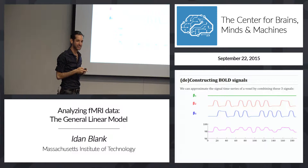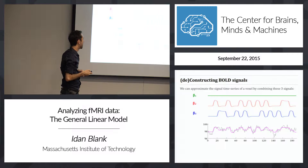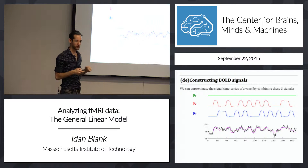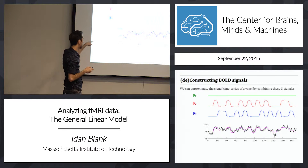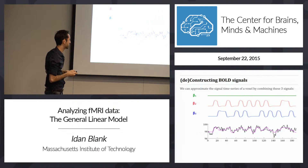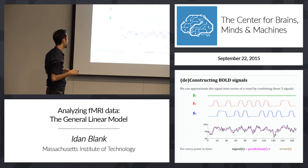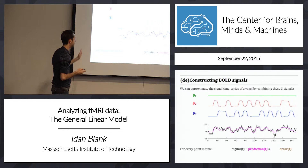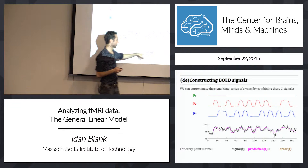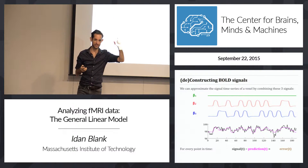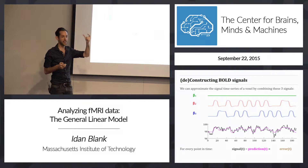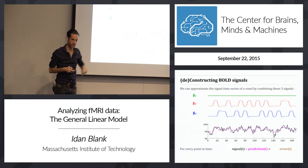We've done some approximations of real signals with a linear combination of predictors. This is our approximation of the actual voxels taken from the language system. The pink is the approximation, the black is the true signal. You can see that it's not perfect — it's pretty good, but not perfect. For every point in time, if you take the signal and subtract the prediction, you get the error: the difference between the actual signal and the best approximation we can come up with.